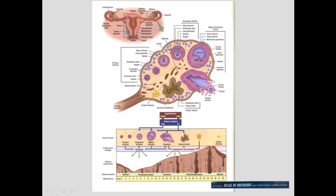There are many small cells in the cortex, along with developing follicles. After ovulation you get a corpus luteum, and these hormonal changes influence the growth of the uterus and the changes in the endometrium.